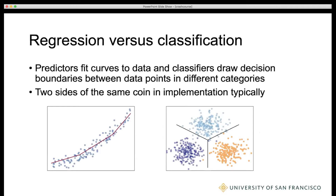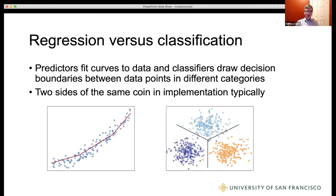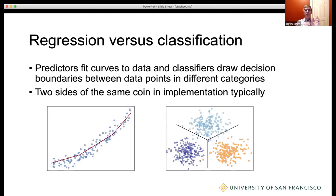At first glance, you'll look at regression and classification and say these are two different things. But it turns out they're really just two sides of the same coin when it comes to implementation. Particularly in deep learning, often all we have to do is stick a sigmoid on the end of our neural network and all of a sudden we have a classifier — we've converted a regressor to a classifier. A regressor draws a line through the data, and a classifier draws lines that are decision boundaries.